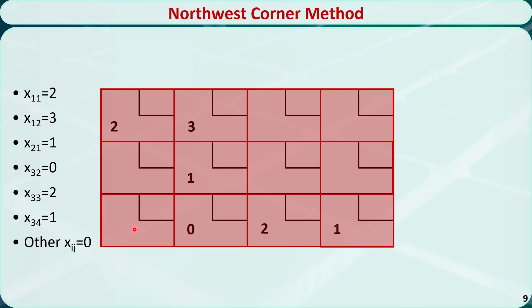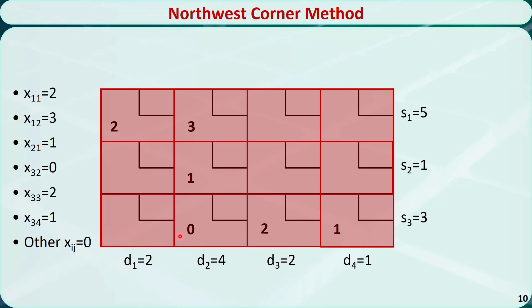If you wonder if this really is a basic feasible solution, you can check whether it satisfies all the equality constraints. Let's bring back the original supply and demand. The sum of the first row: 2 plus 3 equals 5. The sum of the second row: 1 equals 1. The sum of the third row: 0 plus 2 plus 1 equals 3. The sum of the first column: 2 equals 2. The sum of the second column: 3 plus 1 plus 0 equals 4. The sum of the third column: 2 equals 2. The sum of the last column: 1 equals 1. So all constraints are satisfied — this is indeed a basic feasible solution.